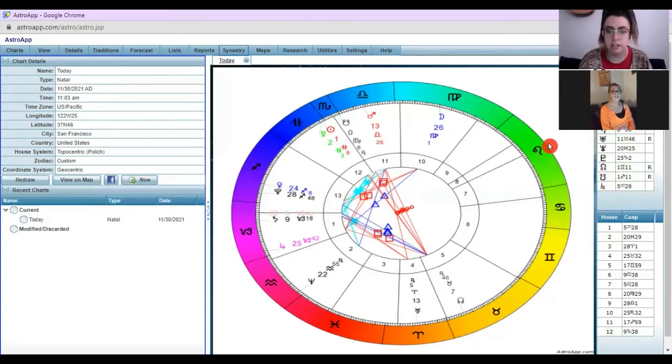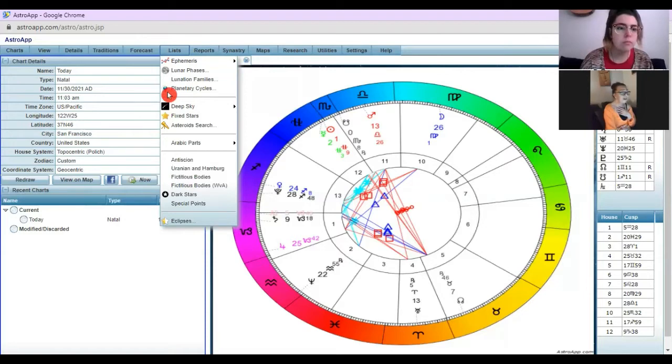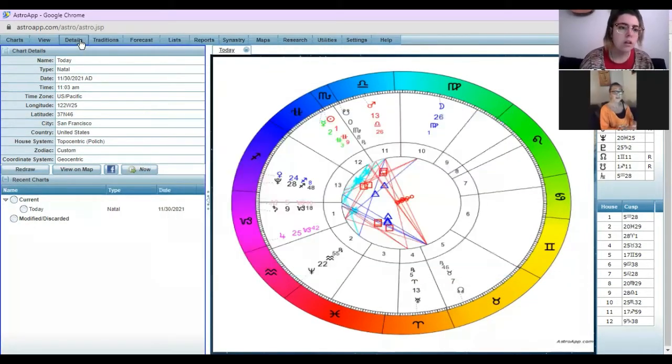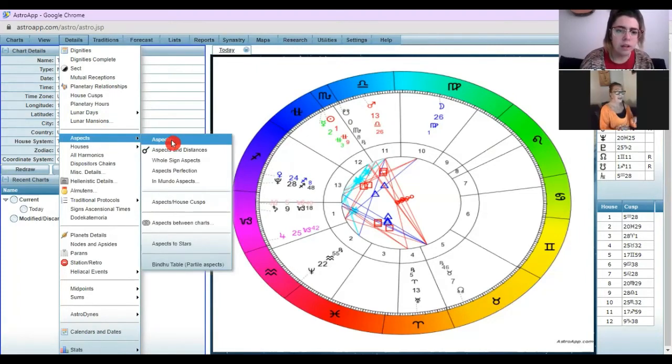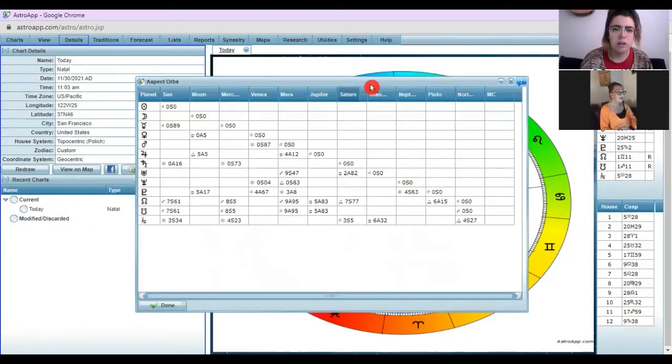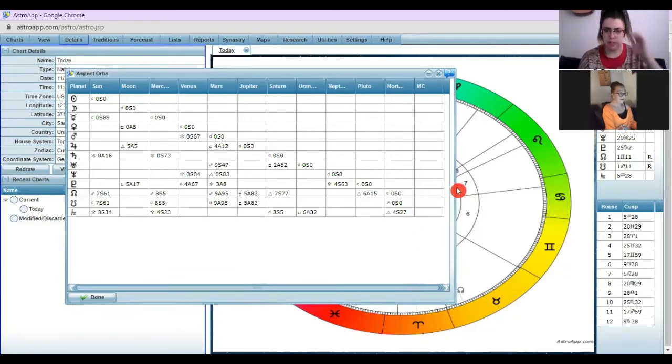But you can get the aspects up. So if you go to details. Then go down to aspects and click on aspects and it will bring up the aspects. You'll get all the aspects come up there. All right. That's definitely super useful, especially with 13 sign. Cause you can't just eyeball it like you can with 12, right? Equal housing, equal signs.